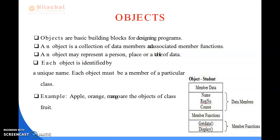For example, Apple, Orange, and Mango are the objects of class Food. As you can see in this diagram, it is a Student Object having the Data Members: Name, Registration Number, and Course. The member functions used for this Student Object are Get Data and Display.